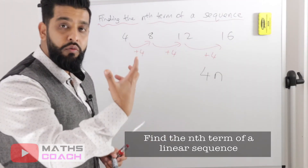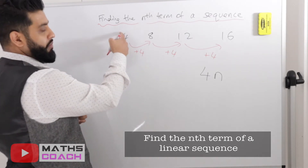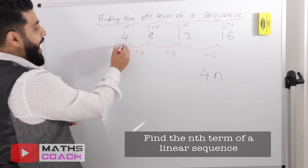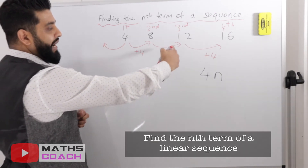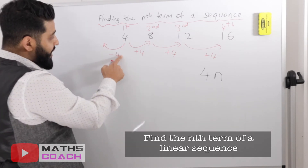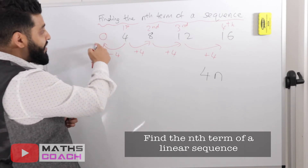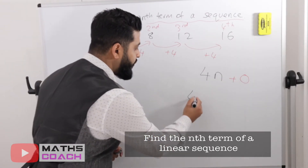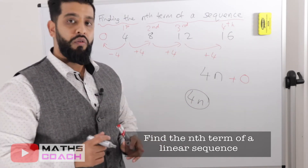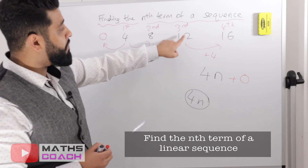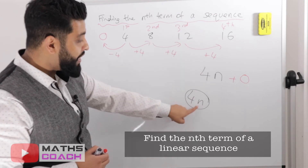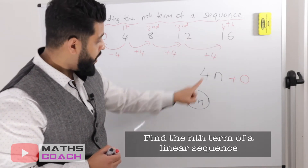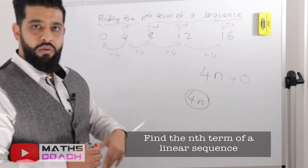4n is the beginning of our general rule. Go to the first term and go backwards — if you were going forward by adding 4, to go back you subtract 4. So 4 take away 4 gives us 0, and 0 is added to our rule. The final rule is simply 4n. You can test this: the third term should be 12, and 4 times 3 equals 12. The fourth term: 4 times 4 equals 16. It works.